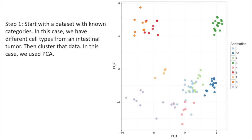Step 1. Start with a data set with known categories. In this case, we have different cell types from an intestinal tumor. We then cluster that data. In this case, we used PCA.